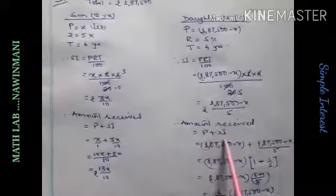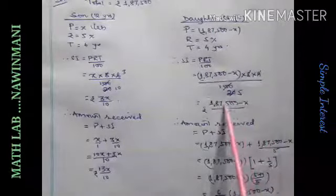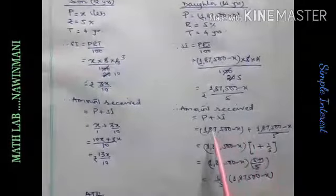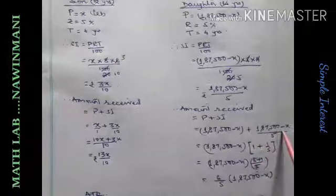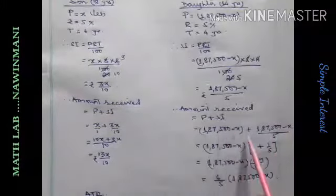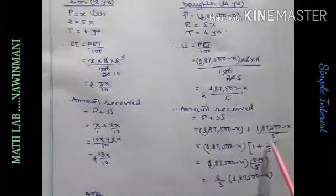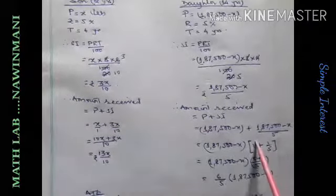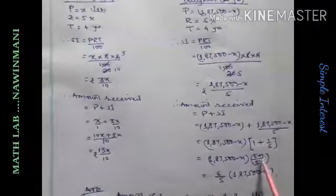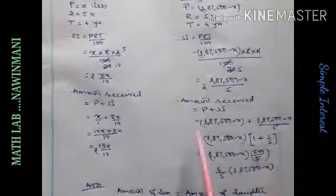So, SI will be this much. What will be your amount? Amount received will be principal plus simple interest. Principal is this, SI is this. Take common. It will be 1 plus 1 by 5. Take common. Then this will be 1 by 1 plus 1 by 5. So, take LCM. It will be 6 by 5 into this amount.